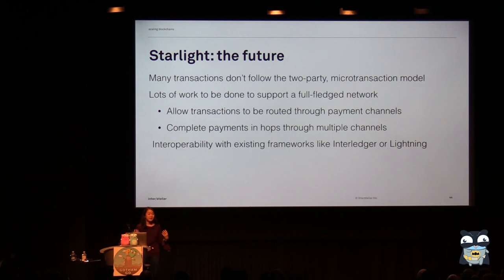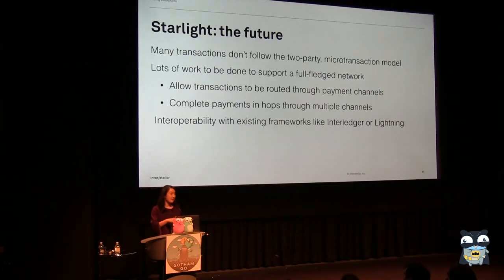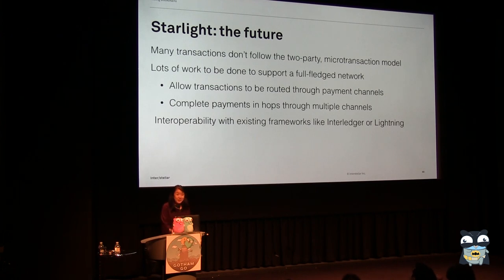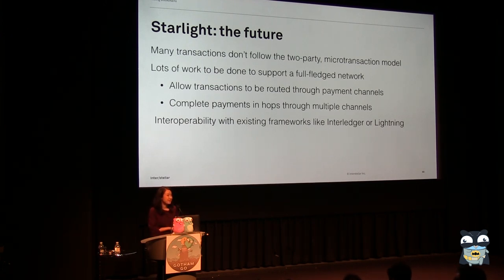That would mean I could seamlessly send a transaction between something on the Stellar network and have it received by somebody who's running a Bitcoin node and has a Bitcoin address. There's a lot of exciting potential, but definitely also a lot of work to be done in terms of the Starlight approach to scaling blockchains.